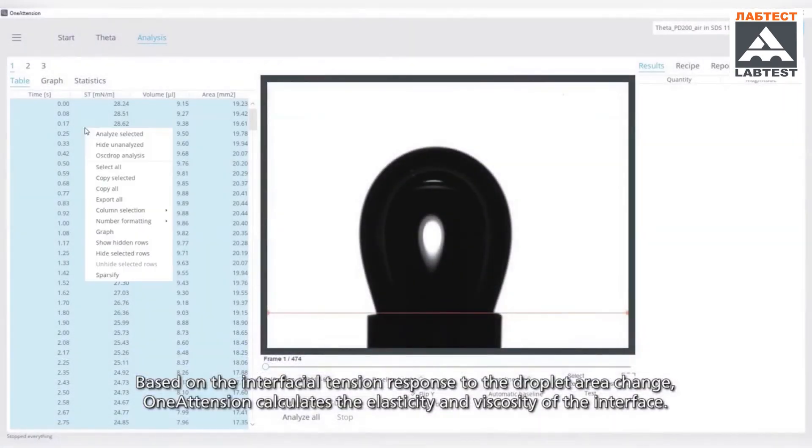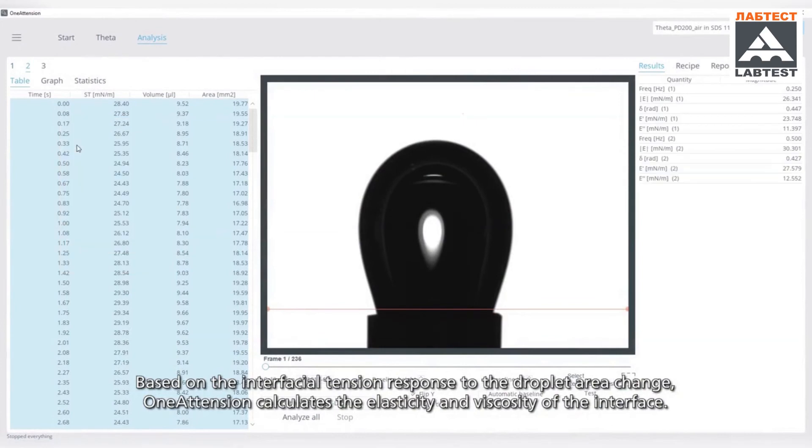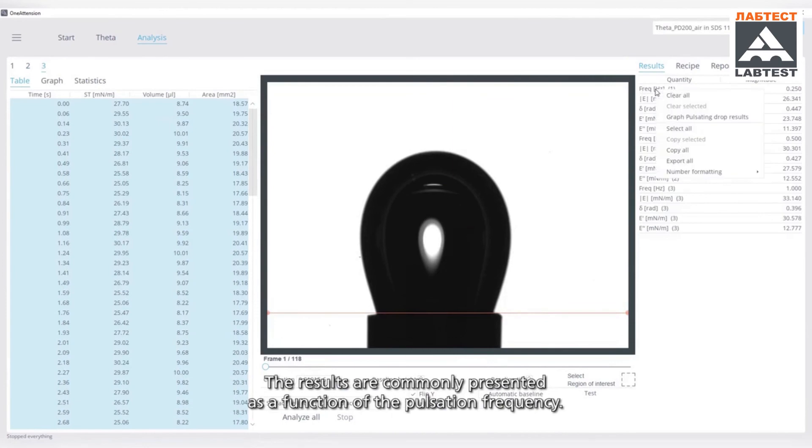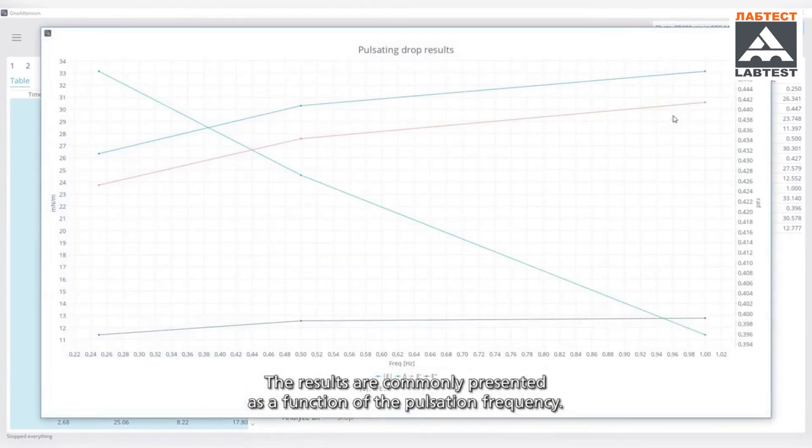Based on the interfacial tension response to the droplet area change, OneAttention calculates the elasticity and viscosity of the interface. The results are commonly presented as a function of pulsation frequency.